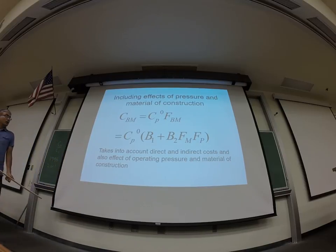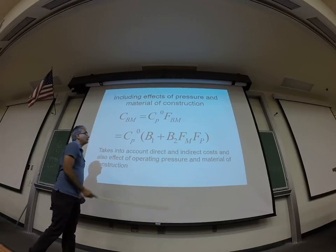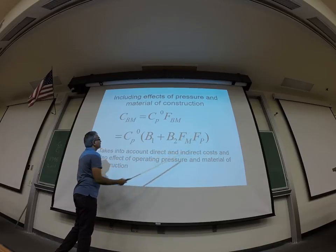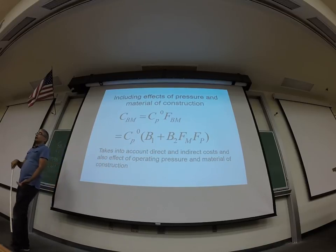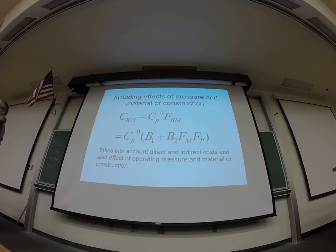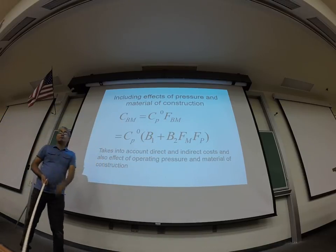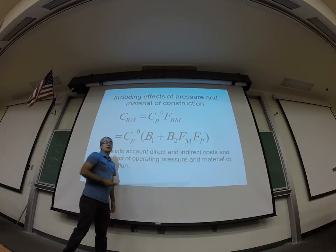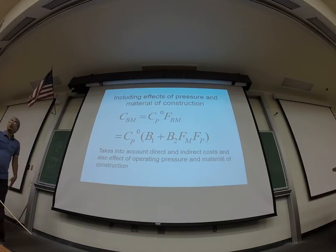So at base conditions, which means room temperature, there is standard pressure, and the material of construction is carbon steel, FM is one and Fp is one. So FM is one, Fp is one. CBM is simply Cp0 times B1 plus B2. So what do you think is the rough value of B1 plus B2? Four. Four. We already talked about that, right? I'm just asking the same question in a slightly different way. So we know B1 plus B2 will be roughly around three to four.